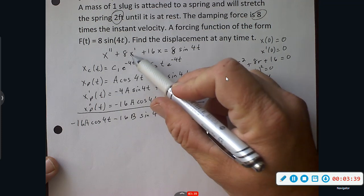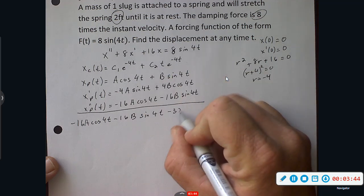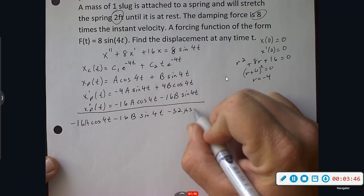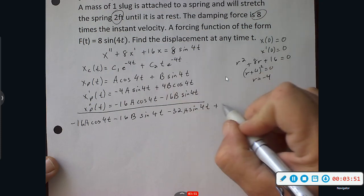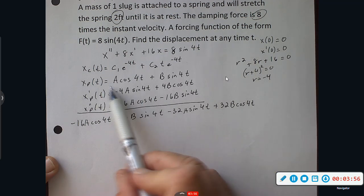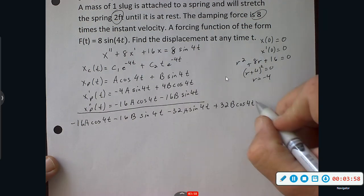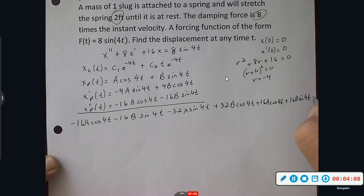Plugging in our times eight X prime times eight, negative four times eight is negative 32A sine 4T. Four B times eight is positive 32B cosine 4T. Xp(T) times 16 is going to be 16A cosine 4T and 16B sine 4T. And all of this mess equals 8 sine 4T.